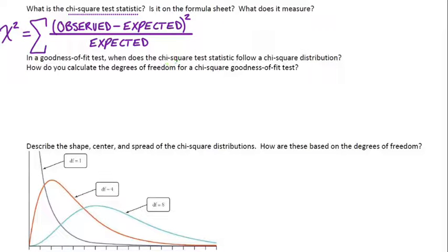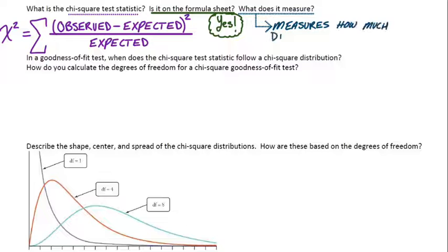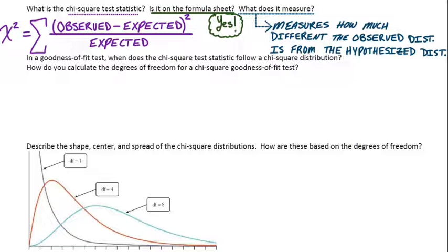Is this on the formula sheet? My answer typically is no, but this one actually is. So the chi-square test statistic, this formula is actually on the formula sheet. And what can we say it measures exactly? This formula measures how much different the observed distribution is from the hypothesized distribution. So we go through each cell. For each one, how far was our observed count from our expected count? Then we square that value and divide by whatever the expected count was. We do that for each one, and then we add them all up, and that's our chi-square test statistic.